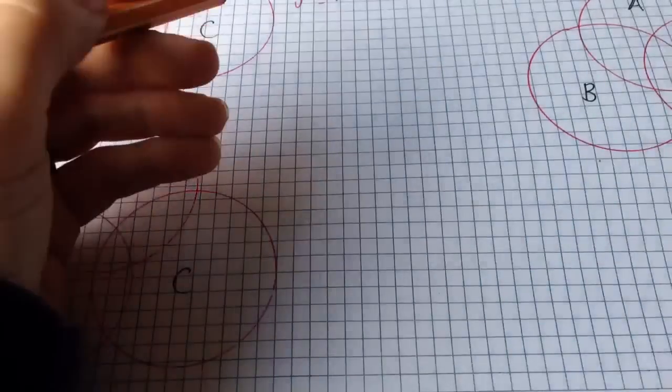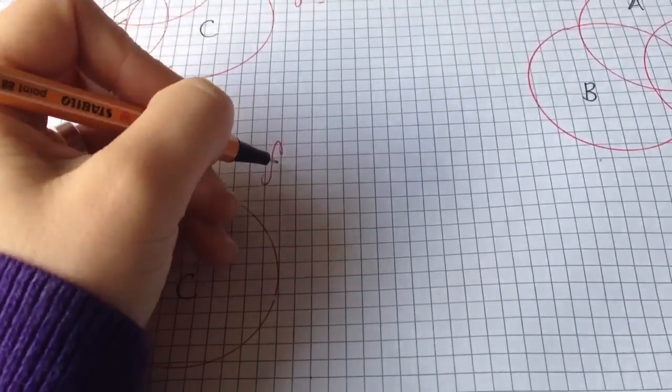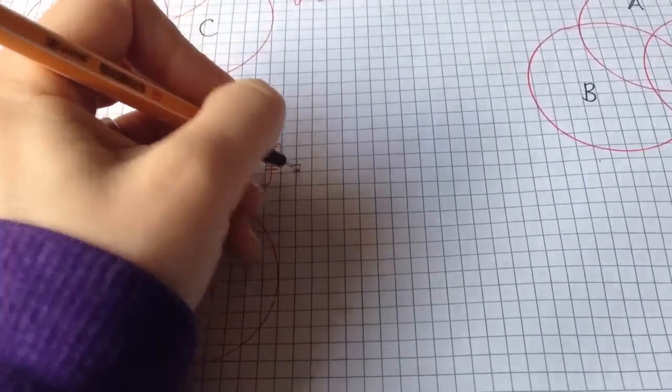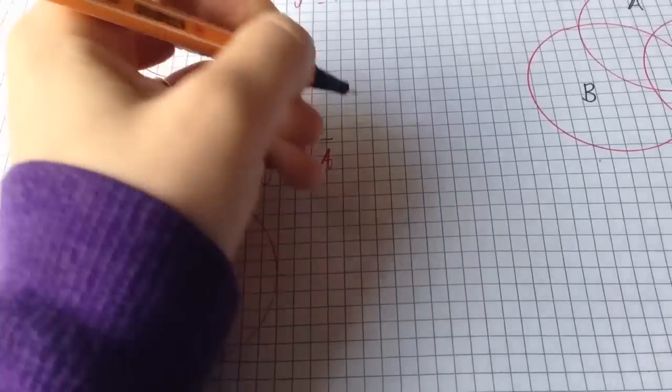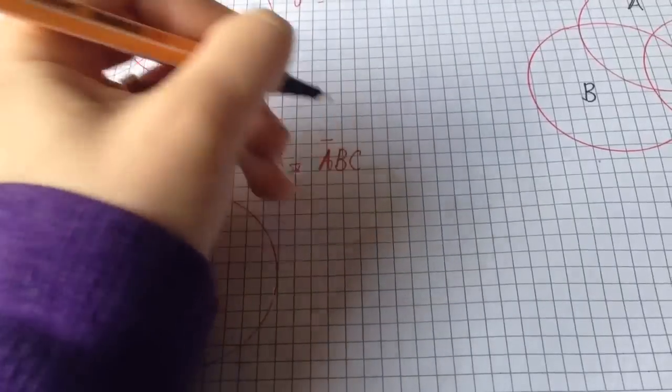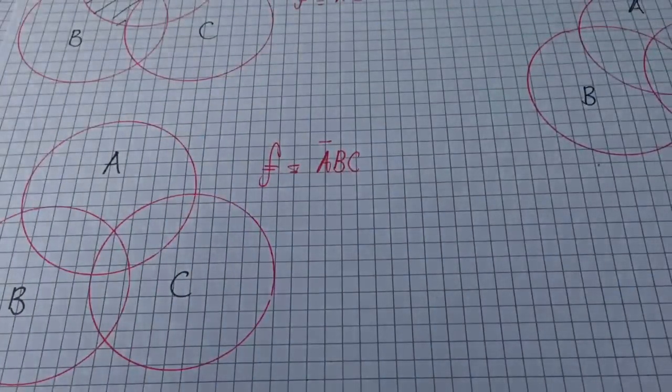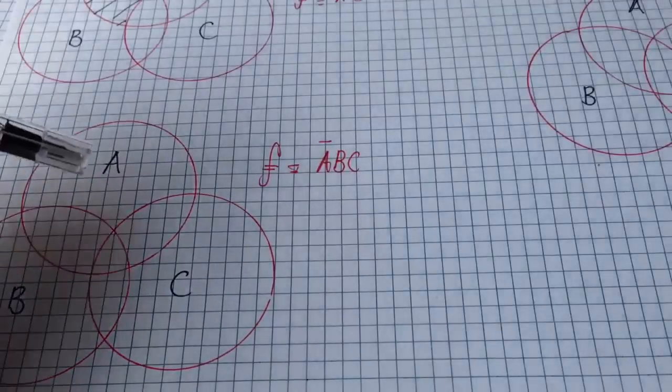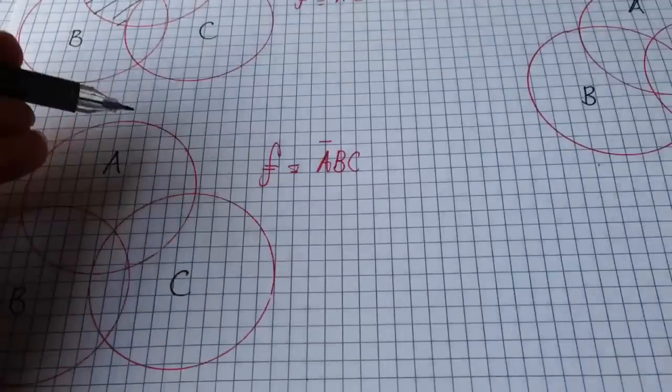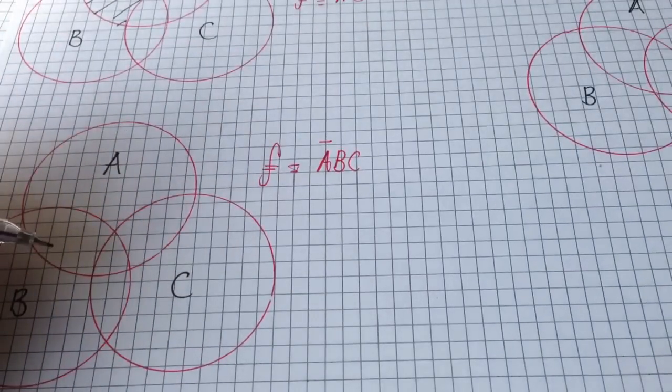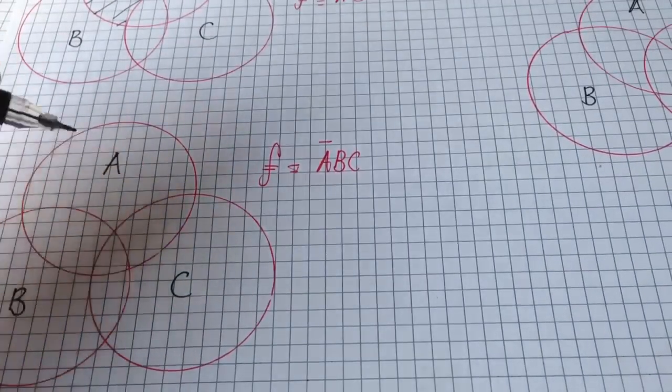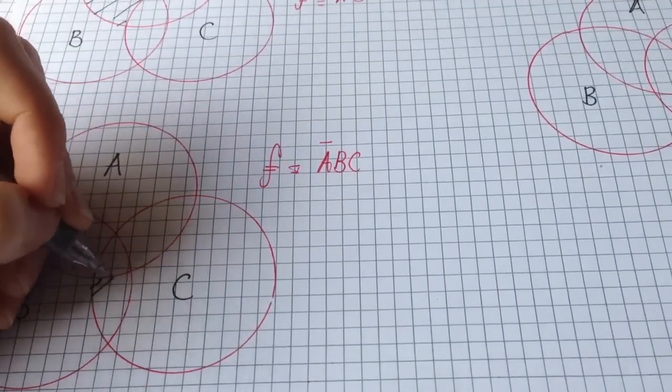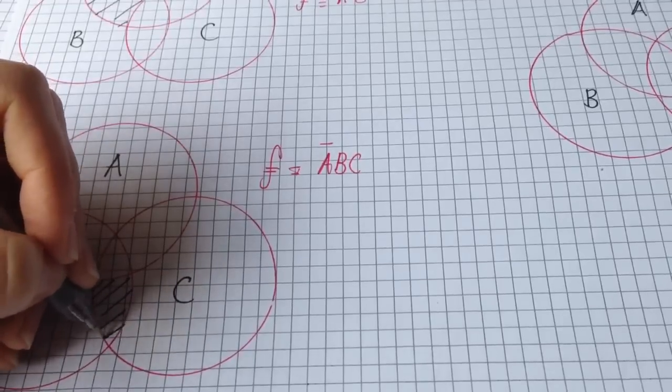Now we look at the second part of the equation, which is F equals NOT A B and C. As you can see, we don't want A, and we want the intersection between B and C, which is this section here.